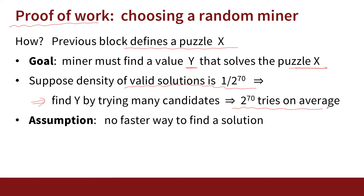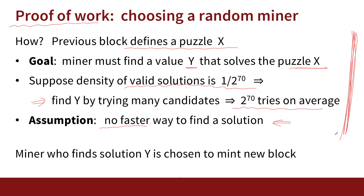2 to the 70 is a very large number. The miner is going to run for enough time to try 2 to the 70 different values until he finds a solution to puzzle X, and that lets him mine the new block. Of course, it's an assumption that there's no faster way to find a solution. If someone figures out a way to solve the Bitcoin puzzles faster than trying lots of candidates at random, they'll be able to become a dominant miner and find solutions before anybody else. The first person to find the solution Y to puzzle X is the one that gets to publish the new block and win the mining rewards.